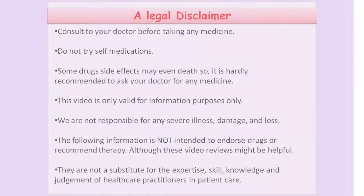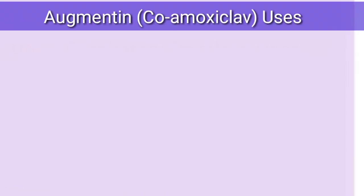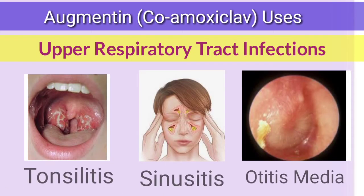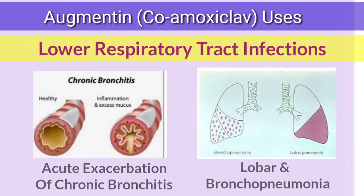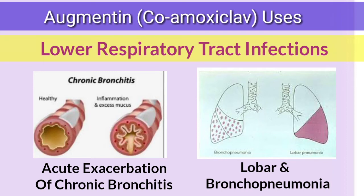What is Augmentin (co-amoxiclav) used to treat? Augmentin is an antibiotic used for the treatment of bacterial infections, including upper respiratory tract infections such as tonsillitis, sinusitis, and otitis media, and lower respiratory tract infections such as acute exacerbation of chronic bronchitis, lobar pneumonia, and bronchopneumonia.